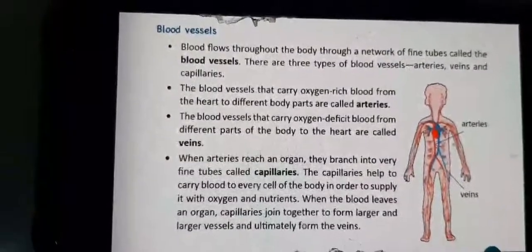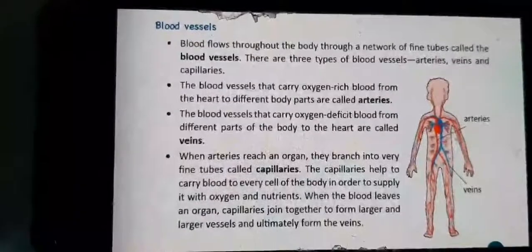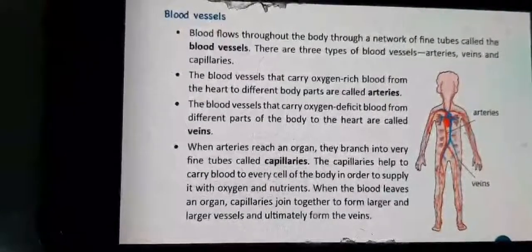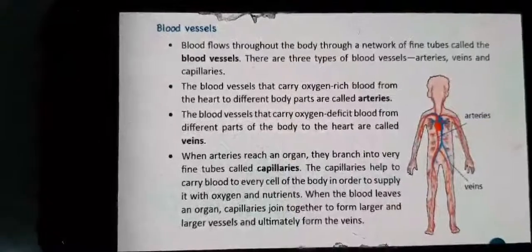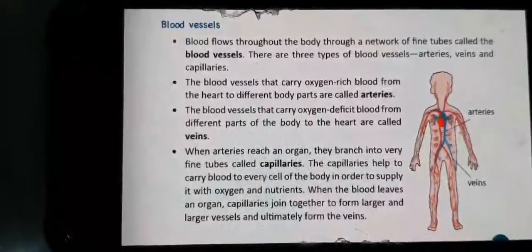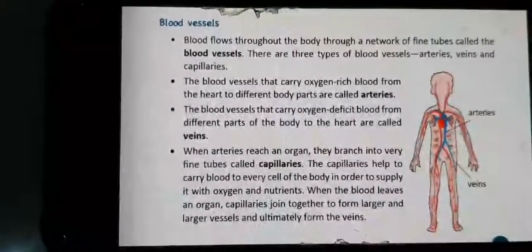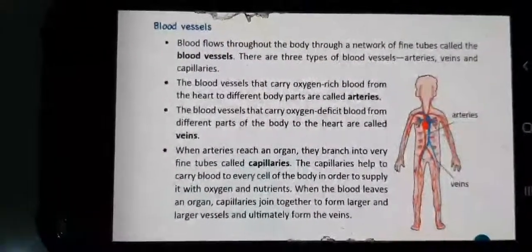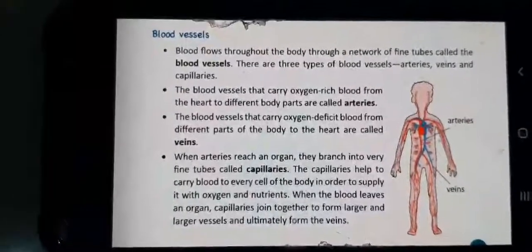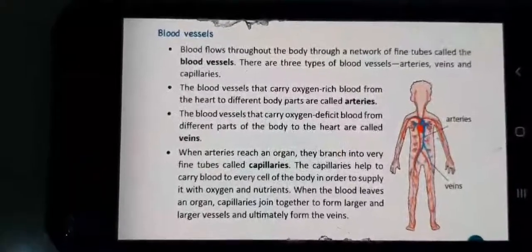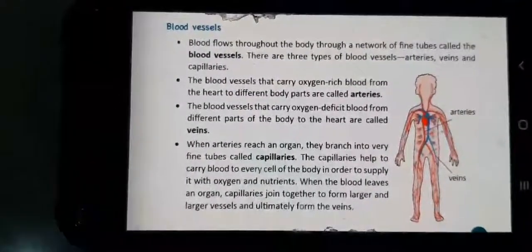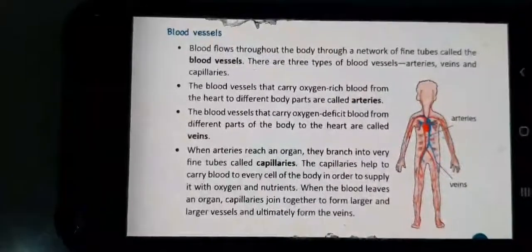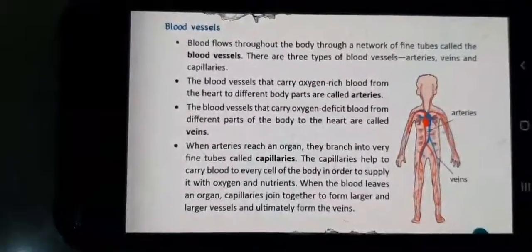The blood vessels that carry oxygen-deficient blood — that is, blood with less oxygen — from different parts of the body back to the heart are called veins. When arteries reach an organ, they branch into very fine tubes called capillaries. Capillaries help carry blood to every cell of the body to supply oxygen and nutrients. When blood leaves an organ, capillaries join together to form larger vessels and ultimately form the veins.